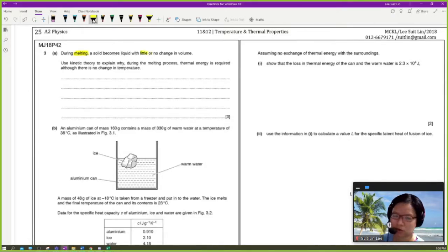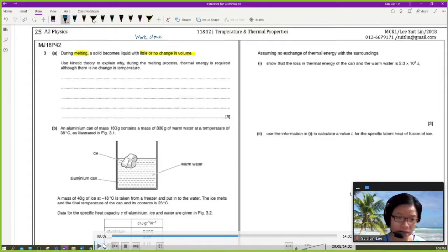Alright, May, June 18, Paper 2. This is a bit longer question because you have to write a 3-mark explanation. So if you are new to A2, writing the explanation in A2 is a little bit more complicated.